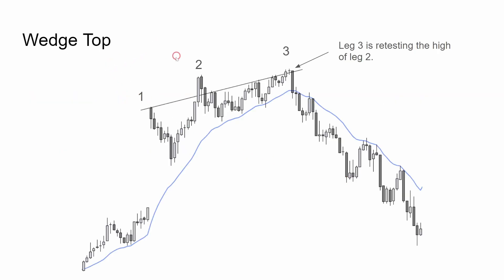Here's a wedge top. We have a bull rally, then a big gap up makes push one, pull back, push two, pull back, push three. Within this giant wedge, there is a nested wedge — push one, pull back, push two, pull back, push three. Leg three is testing the high of leg two. Just like the double top, the buyers get out at breakeven, the sellers overwhelm the buyers, and the market moves for a few legs lower.